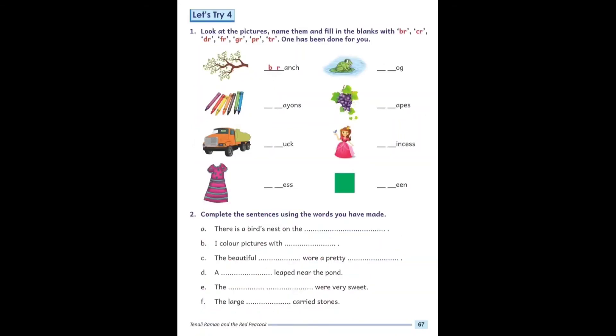Now we read Let's Try 4. Look at the pictures, name them and fill in the blanks with BR, CR, DR, FR, GR, PR and TR. One has been done for you. First picture identify - branch. Here you write BR blend, branch.